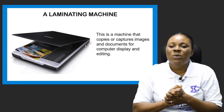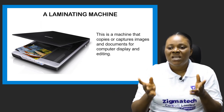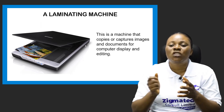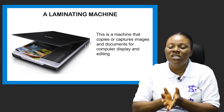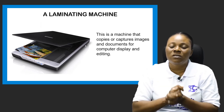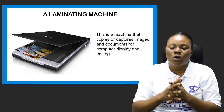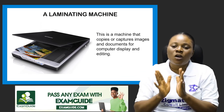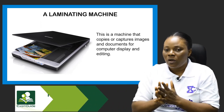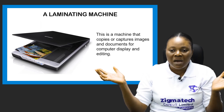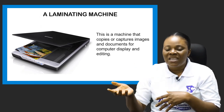The next type of equipment is the scanning machine, which works together with a computer system. It is a machine that copies or captures images or documents for computer display or editing. It is a machine used to send copies of documents or images into the computer system. You place your document on it, and since the scanner is connected to your computer system, once you press the button it sends the copy of that document automatically to the screen of your monitor. From there you can send it through emails or use it as needed.